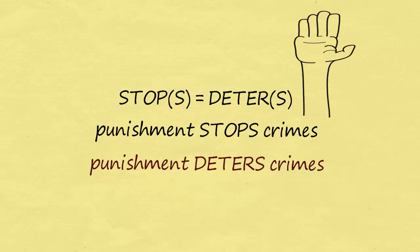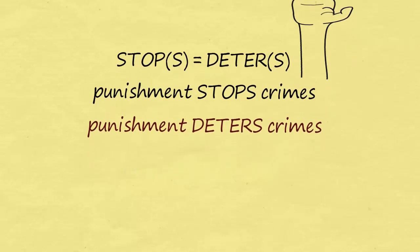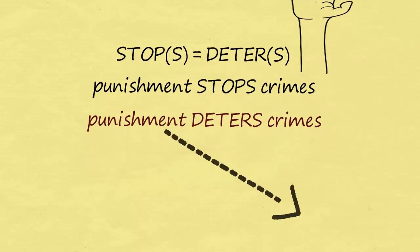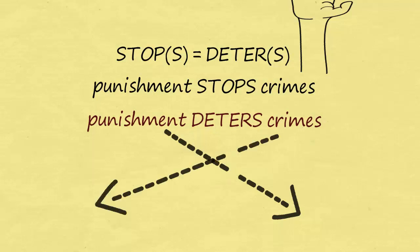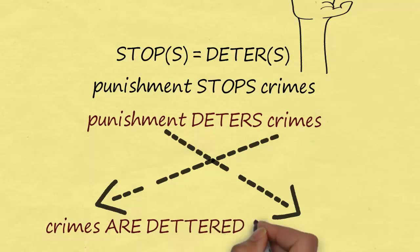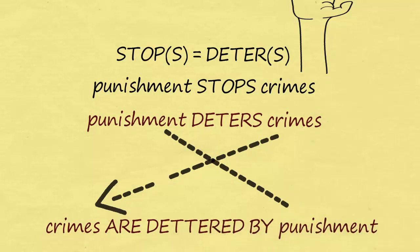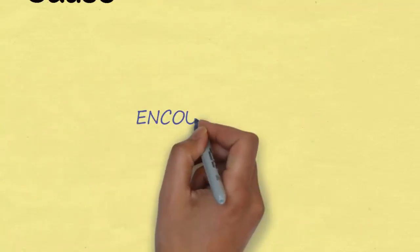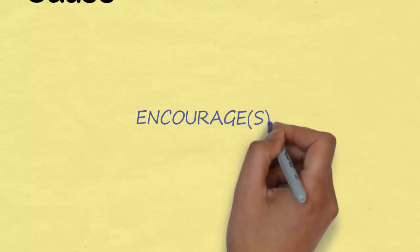Remember, we can switch it around as well. We could say 'crimes are deterred by punishment.' I'm bringing the effect to the front of the sentence. It's basically just a passive sentence, and we do that because we want to make the effect more important. Crime is important, so I'm going to start with that. 'Stop' is a great word to use if we're talking about causes.